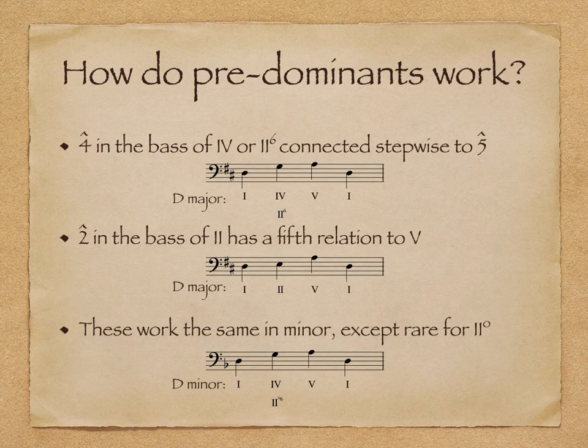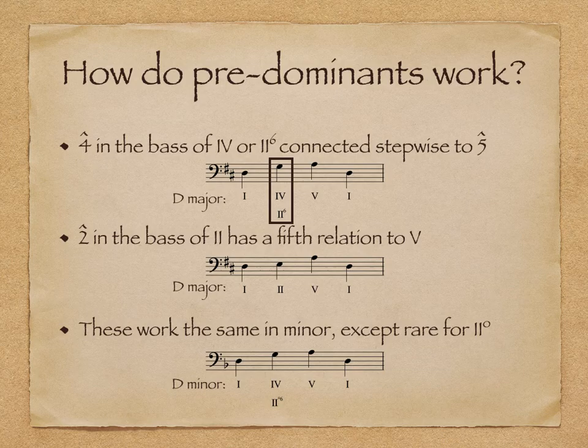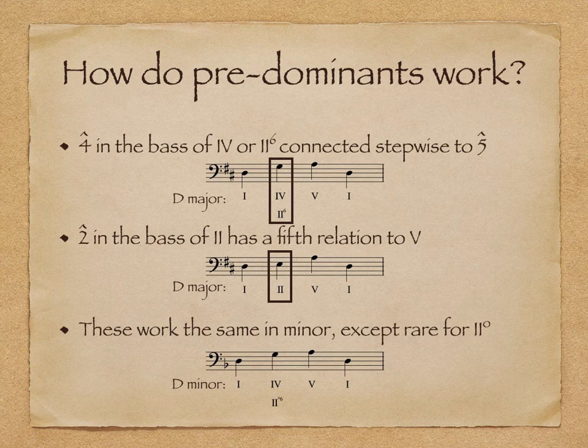The most common predominant chords are 4 and 2-6, and have scale degree 4 in the bass, which is connected via stepwise motion to the V chord. The less common root position 2 chord has scale degree 2 in the bass, which has a 5th relation with the V chord. In our example, if E moves down a 5th, it will reach A. Remember that the 5th relationship is very important in tonal music.